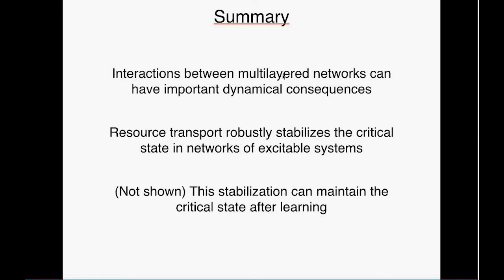In summary, interactions between multi-layered networks can have important dynamical consequences. Resource transport robustly stabilizes the critical state in networks of excitable systems — language applies beyond neuronal networks to other excitable systems. Importantly, this mechanism can stabilize the critical system even after learning, and once re-stabilized, the learned pattern in the network remains. This could be used to stabilize networks while learning.